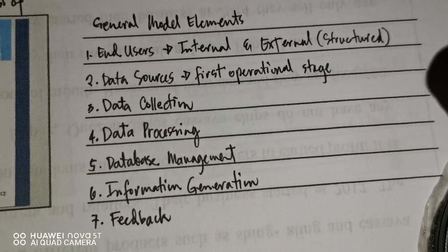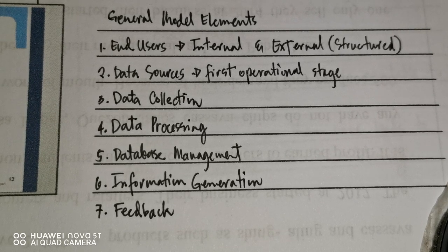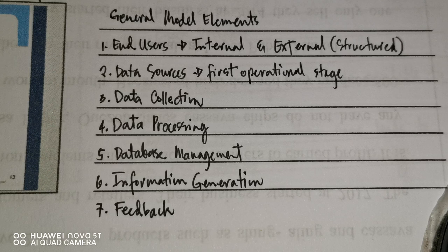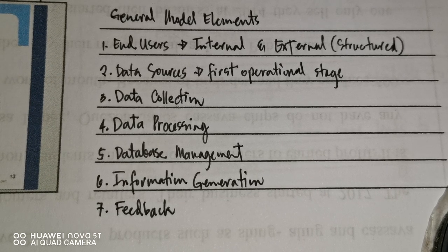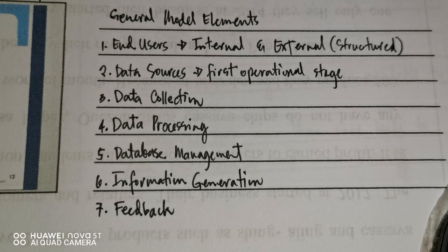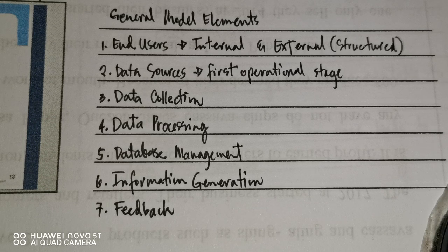The general model elements are: end users (internal and external), data sources, data collection, data processing, database management, information generation, and feedback. External end users are structured — they include government, shareholders, and investors, and reports for them must follow a standard format. Internal end users are management, who usually need information without a definite structure — whatever information they need is what gets reported.